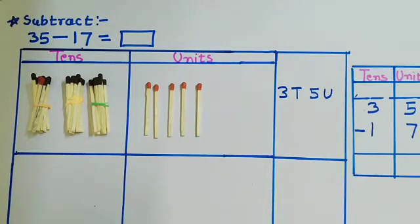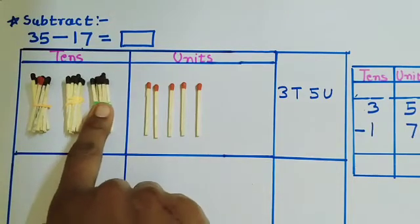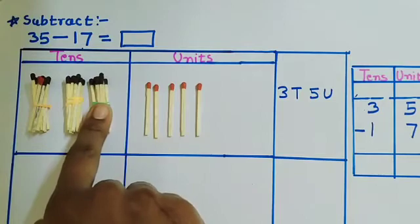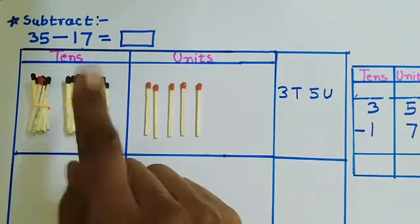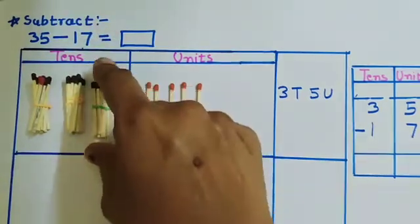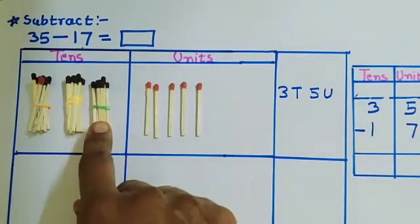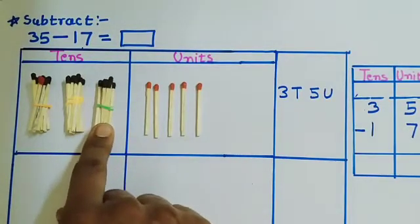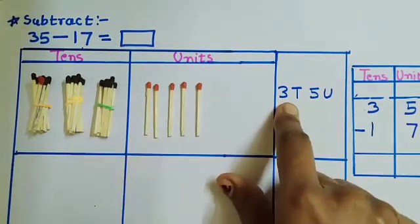So what will we do, children? We will take the help of the untying method. What we will do is untie 1 ten. So what we have to do is subtract 1 ten from these 3 tens.